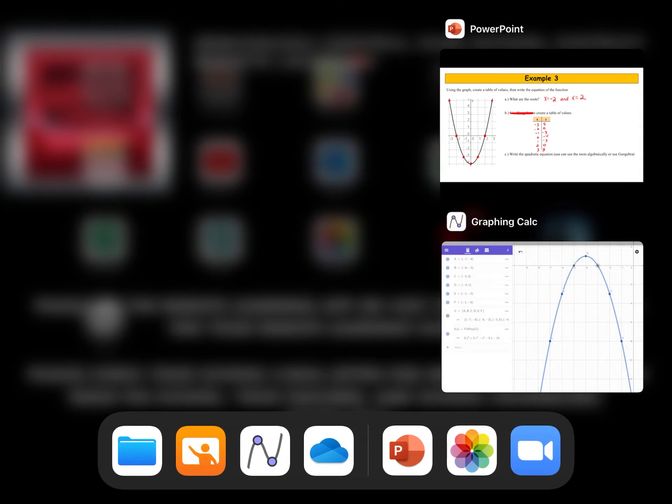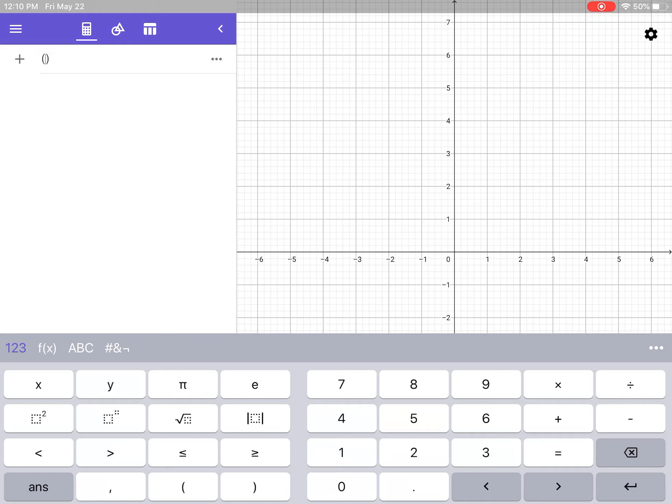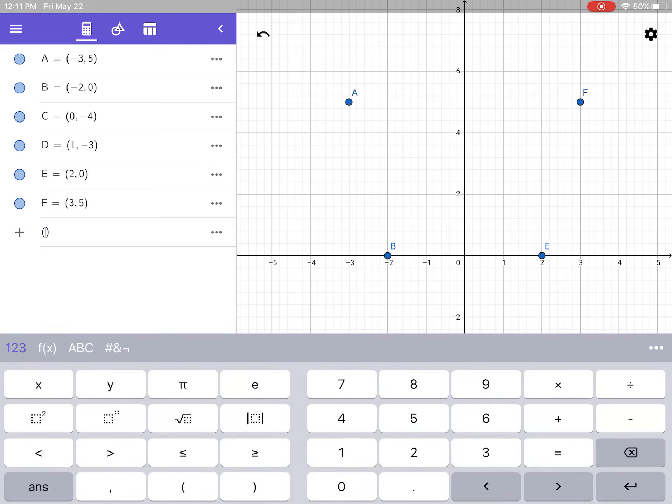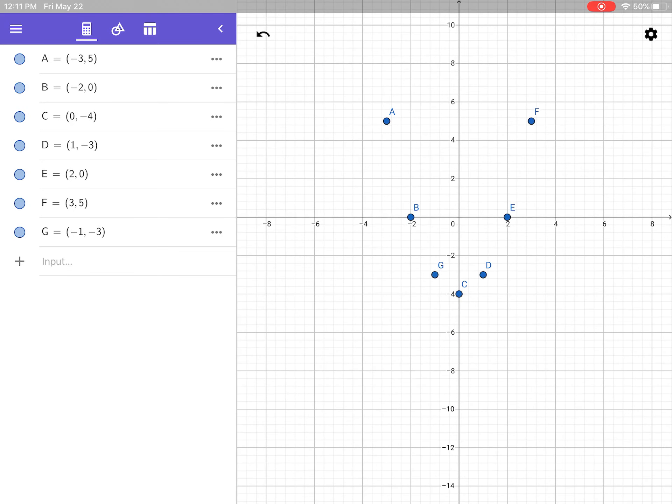Now I can use my table of values to create an equation in GeoGebra. I'm going to go to GeoGebra, clear all, and start by typing in the values I just put in. I have negative 3, 5. Negative 2, 0. 0, negative 4. 1, negative 3. 2, 0, and 3, 5. Okay, zoom to fit. There's my values. Oh, did I skip one? I think I skipped negative 1, negative 3.